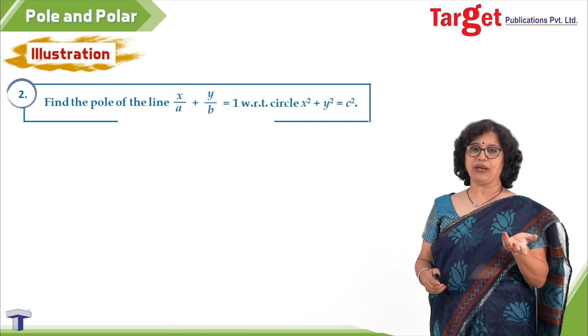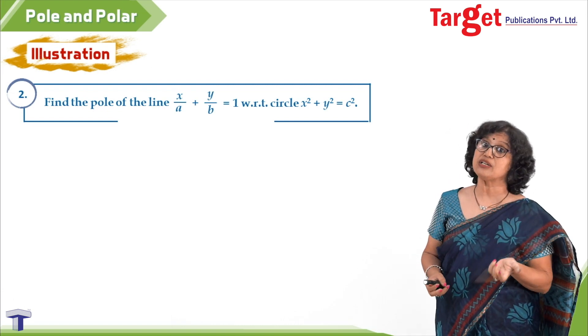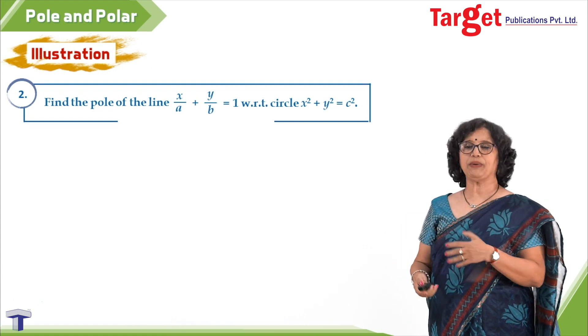Now here, the pole is to be obtained. The polar is given. In the previous question, the pole was given and the polar was to be obtained.